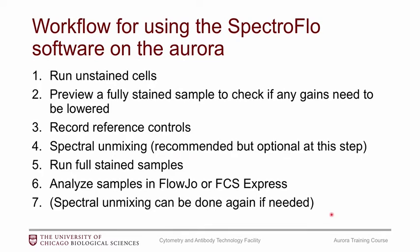Now that we've gone over panel design and sample prep, I'm going to move on to talking about how to use the instrument itself. As a reminder of the workflow on the Aurora using the software called SpectroFlow: start with unstained cells, set forward and side scatter, preview a fully stained sample to make sure it's entirely on scale, check gains, record reference controls, run SpectroFlow, run fully stained samples, then move on to analysis.